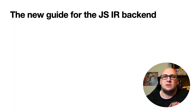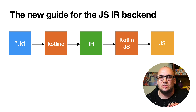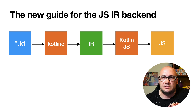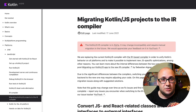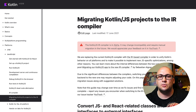IR stands for Intermediate Representation. Rather than directly generating JavaScript code from Kotlin source code, the Kotlin/JS IR compiler backend generates an intermediate representation, which is subsequently compiled into JavaScript. For Kotlin/JS, this enables various optimizations and improvements, such as slimming down the generated code size or enabling better interoperability with the Java and TypeScript ecosystems. The IR compiler backend is available starting from Kotlin 1.4 and can be configured using the Gradle plugin. With this new release, we are publishing a guide that will help you migrate your projects to the new IR-based backend for Kotlin/JS.